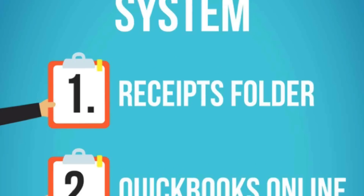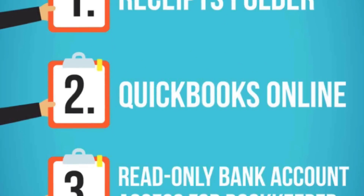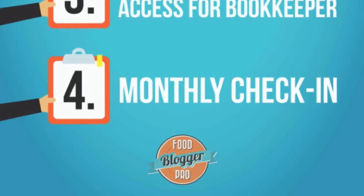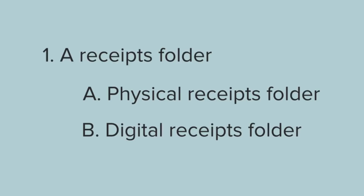Number one: receipts folder. Number two: setting up QuickBooks Online. Number three: setting up read-only bank account access for your bookkeeper. And number four: the monthly check-in. If you want to see the blog post for this, you can go to fbpro.co slash zen accounting.